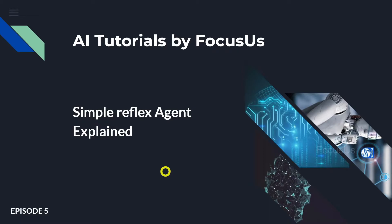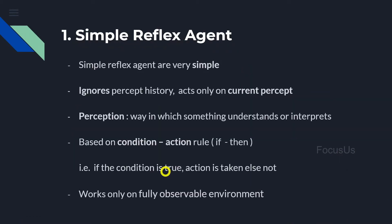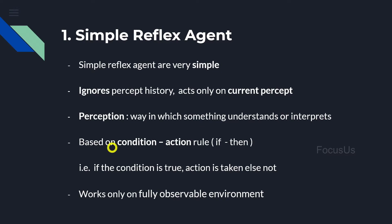Simple reflex agents are a very simple kind of agent. It is simple because it basically ignores all the percept history and acts only on the basis of the current percept. Perception is just the way in which something — the agent — understands or interprets its environment. So basically, a simple reflex agent ignores what it already knows before making any decision, as if it has no knowledge base.